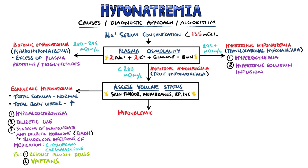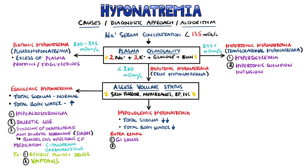Hypovolemic hyponatremia occurs when the total body water decreases, but the body sodium drops more. Causes can be divided into extrarenal and renal causes. Extrarenal causes include vomiting and diarrhoea, third space losses, and traumatized muscle. Renal causes include diuretics — especially in the elderly, as their ability to dilute urine is decreased — and hypoaldosteronism.